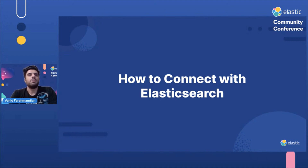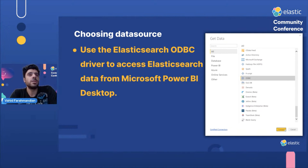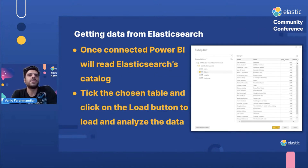After this introduction about Power BI, let's see how we can connect to Elasticsearch. In order to connect with Elasticsearch, we need to install the Elastic ODBC driver. After installing and properly configuring the Elastic ODBC driver, we can use Power BI Desktop to choose the ODBC connection to connect to the Elasticsearch data source. Unfortunately, there is no direct connection between Power BI and Elasticsearch, so we need to use ODBC connections. Once connected, Power BI will read the Elasticsearch catalogs, and as you can see in the image, you can select the desired table and click the Load button to load your data from Elasticsearch into the Power BI local database.